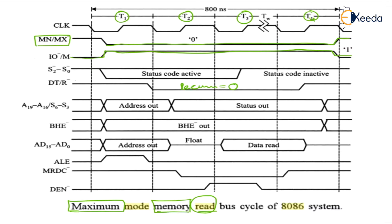In the first clock pulse we access the address, and in the next clock pulses we transfer the data. The address bus is put high first, then Bus High Enable (BHE) is put high. The data line is high during transmission. ALE high means we are accessing the address; when ALE is zero, we are accessing the data. During the memory read operation, the read signal is enabled.